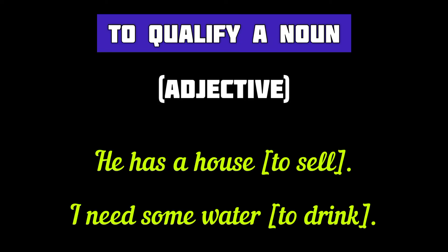The infinitive has some other uses too. Like it may qualify a noun as an adjective. For example: 'He has a house to sell.' Here 'a house' is a noun and 'to sell,' which is the infinitive, is qualifying the noun 'a house.' 'I need some water to drink.' 'To drink' is the infinitive acting as an adjective to qualify the noun 'water.'